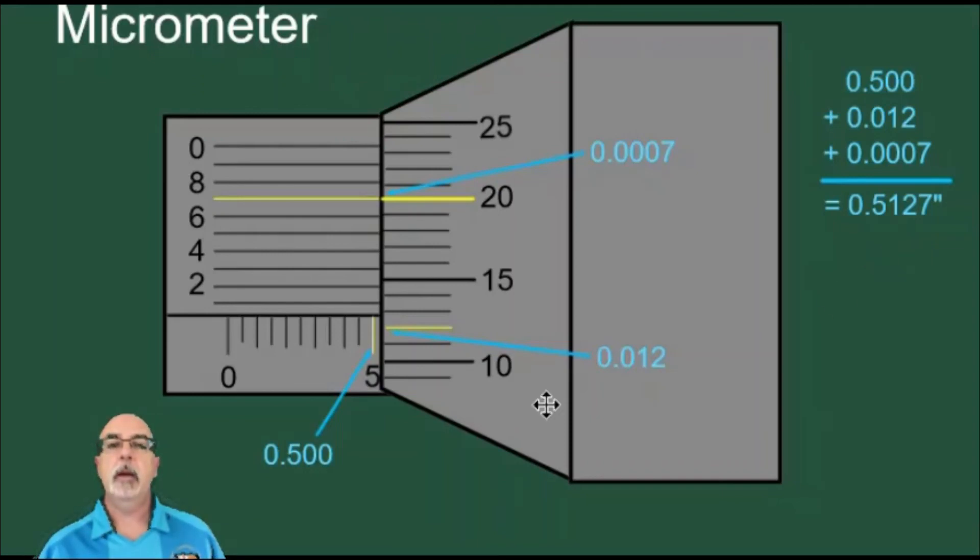To summarize, we use three scales. We use the main scale to find the first number that we write down, in this case 0.500. We use the second scale with the horizontal lines on the thimble to find the next number we have to write down, which in this case is 0.012.